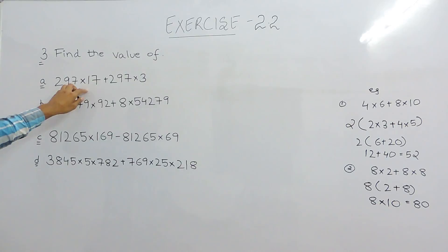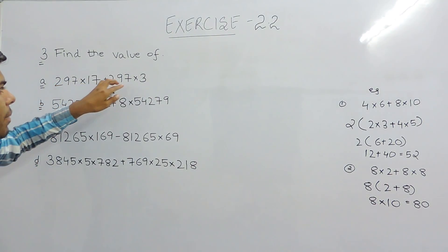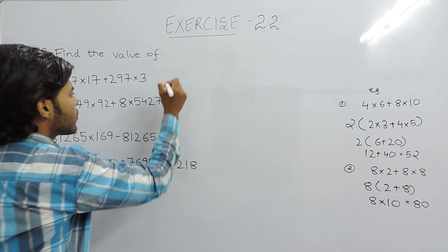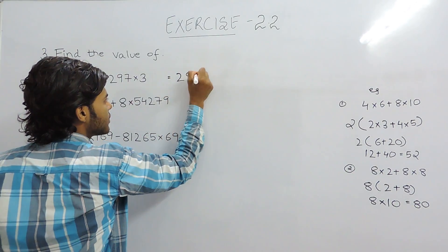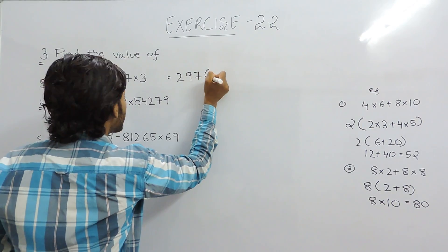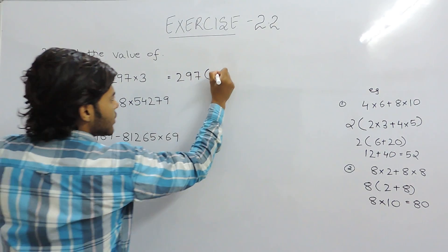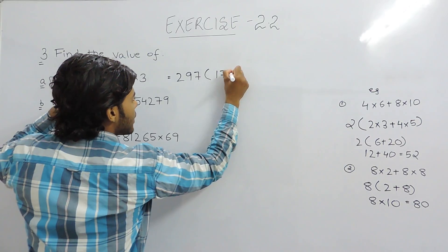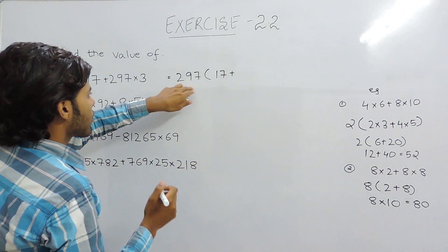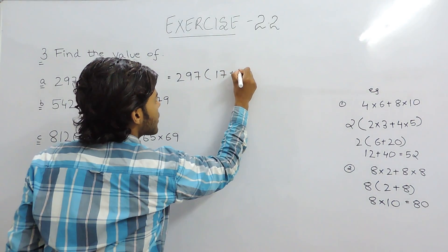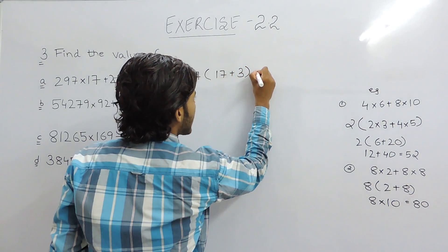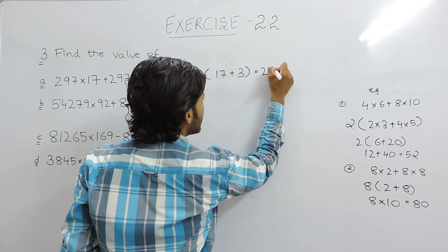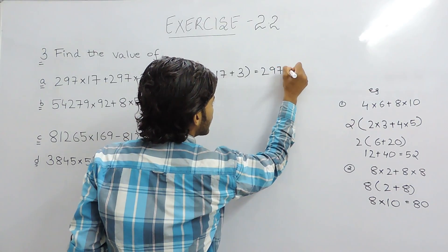For example, in questions like 297×17 + 297×3, you cannot easily multiply directly. First, we take 297 as common. Inside the bracket there remains 17, and since 297 is also common from the other term, inside there remains 3. So 17 + 3 = 20, giving us 297×20.